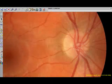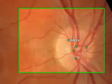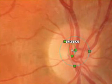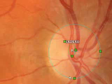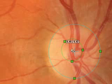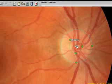To measure a cup-disk ratio, press on the cup-ratio tool. Click on the center of the disc. Move the boxes out to be coincident with the outside of the disc, and then move the cup squares out to be coincident with the cup. You can move the triangle and the cross inside to adjust the circle itself.